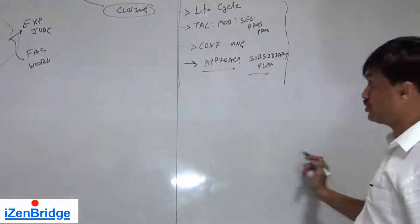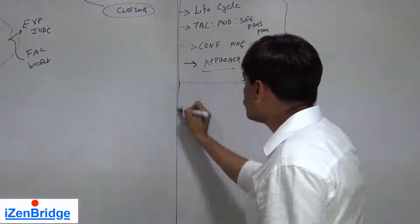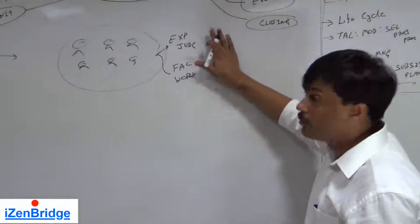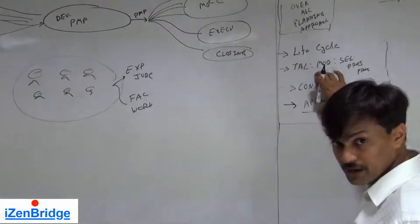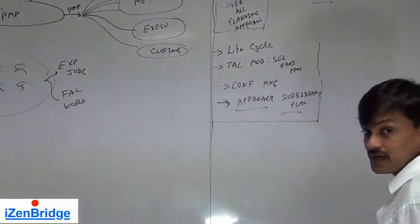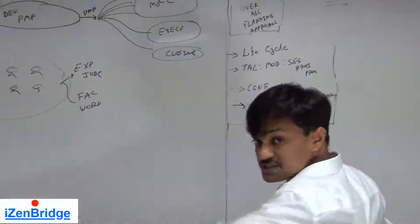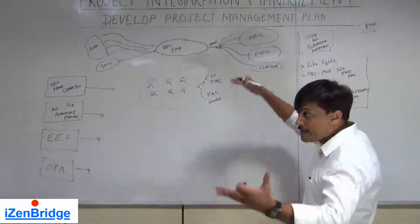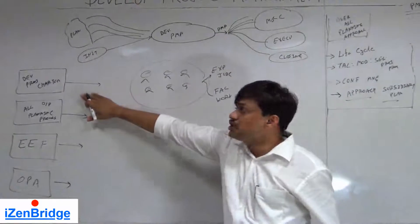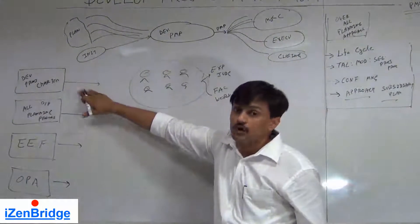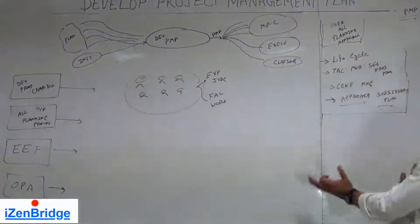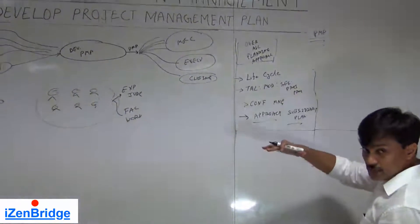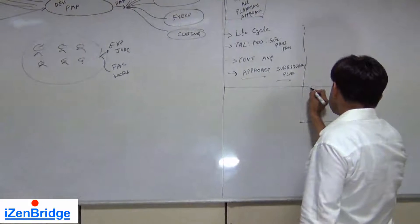The expert judgment and facilitation workshop primarily produce this overall planning approach section of the project management plan. The remaining two sections come from other processes, but these experts are responsible for ensuring that everything is integrated in a manner that helps achieve the project vision declared in the project charter.